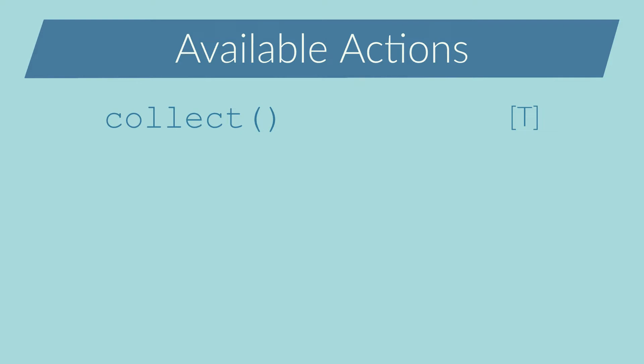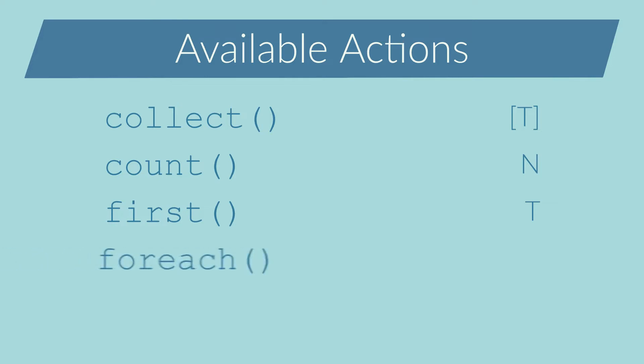What about the actions? I can collect all the elements into a single list and return it. I can count how many elements reach the end of the pipeline, or return the first element which reaches the end. With forEach, I perform an operation on each element without returning anything, such as printing the result or sending it somewhere. With reduce, I aggregate each element into an accumulative result — for example the sum of all elements. There are some other actions, but I won't list them all.